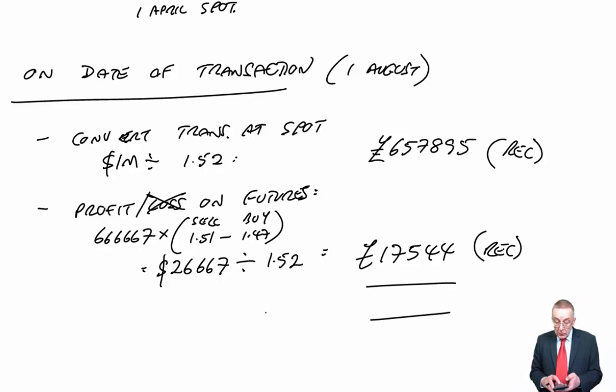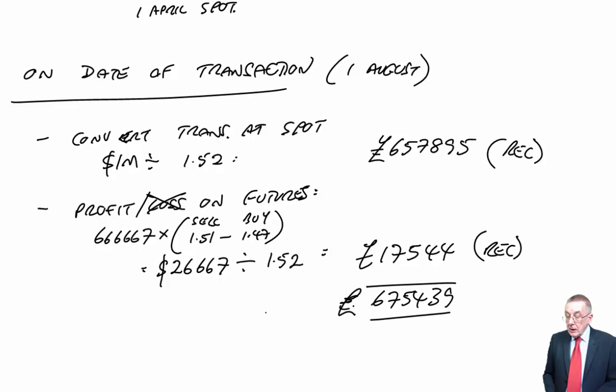The amount we were gambling was 666,667 pounds. The profit or loss is the difference between the buy price and the sell price. Well we bought futures on the 1st of April at 1.47, we sell them on the 1st of August at 1.51. And so here we're making a profit on the futures of 4 cents per pound. 666,667 times 4, the profit is 26,667. But the profit remember is in dollars. We're making a profit of 4 cents on every pound, and so we need to convert that into pounds. This happens on 1st of August, on 1st of August the spot is 1.52, and so a profit of 17,544.